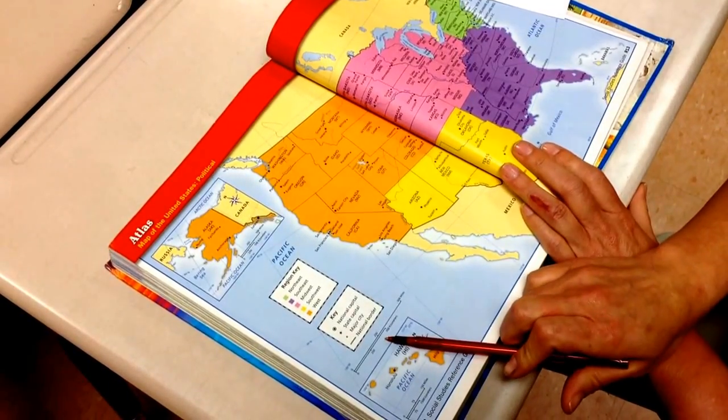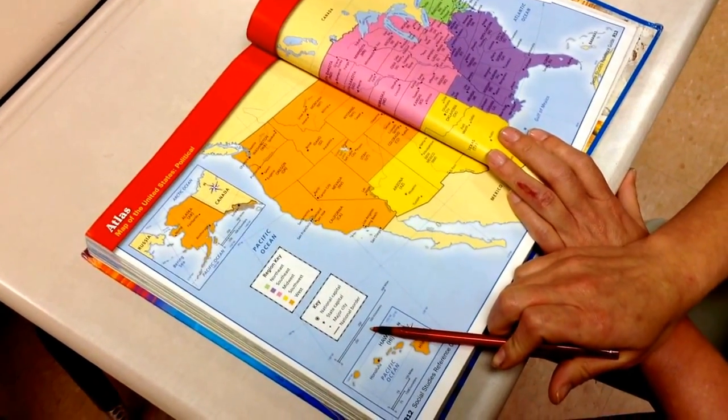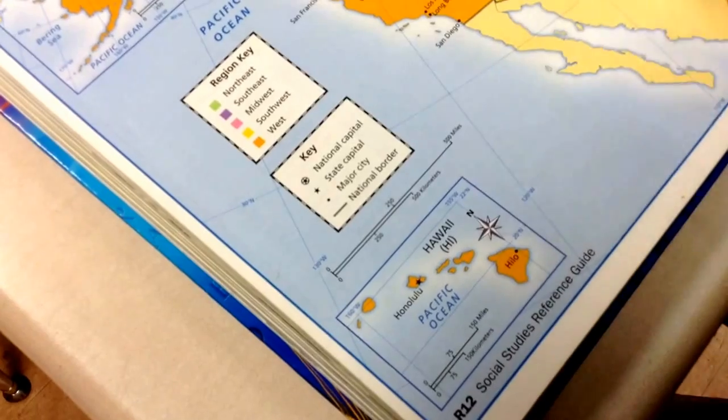Okay, this is a map scale. Can you get real close to that for everybody? This part here is the map scale. It's like a ruler for a map.